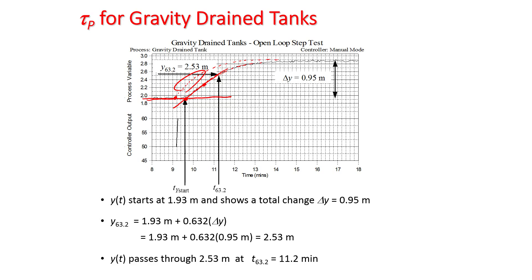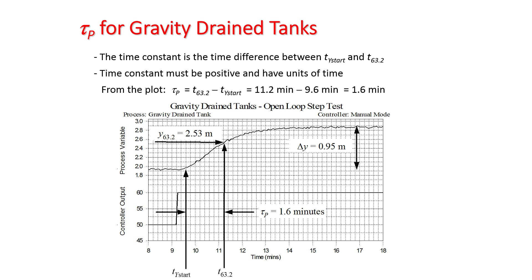From the graphical method, we identify the time at 11.2 minutes. Make sure not to include the dead time inside tau_p — tau_p and theta_p are separate. In this plot, tau_p equals 1.6 minutes.